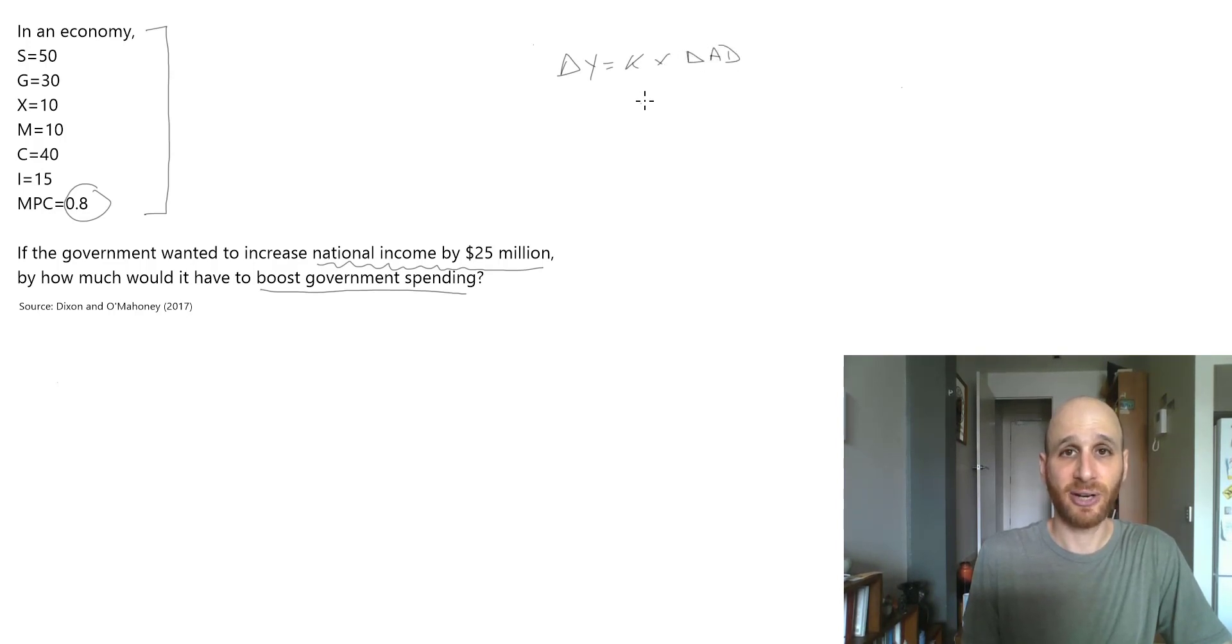We can see from this question that the government wants to increase national income by 25 million dollars. So we're going to need to know about the multiplier, but the change here is the change in government spending. That is our measure of aggregate demand.